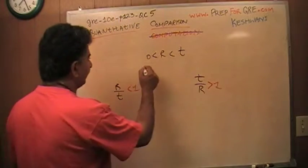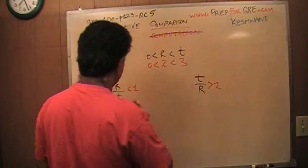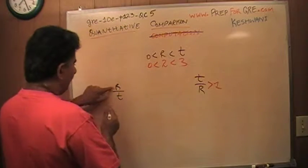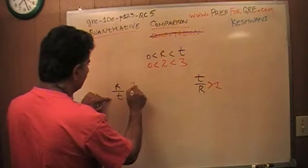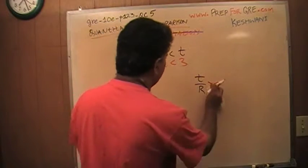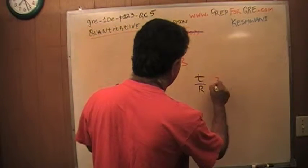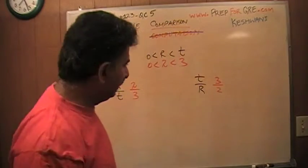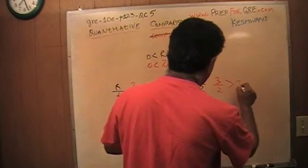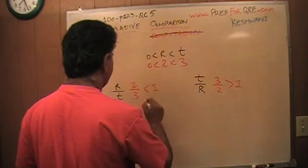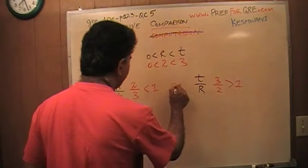Let's plug in numbers here. How about two and three? So if I plug in two and three, r over t becomes two-thirds and t over r becomes three halves. As you can see right away, three halves is more than one. This is less than one. Therefore, since that is more than one, the answer is B.